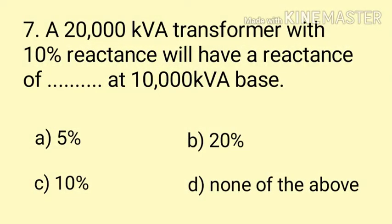Question number 7. A 20,000 KVA transformer with 10% reactance will have a reactance of dash at 10,000 KVA base. Is type ka question maine abhi abhi kiya hai. Isme hume nikalna hai reactance — formula put karo base KVA par: (base KVA / rated KVA) × percentage reactance at rated KVA = (10,000 / 20,000) × 10% = 5%. The correct answer is Option A.